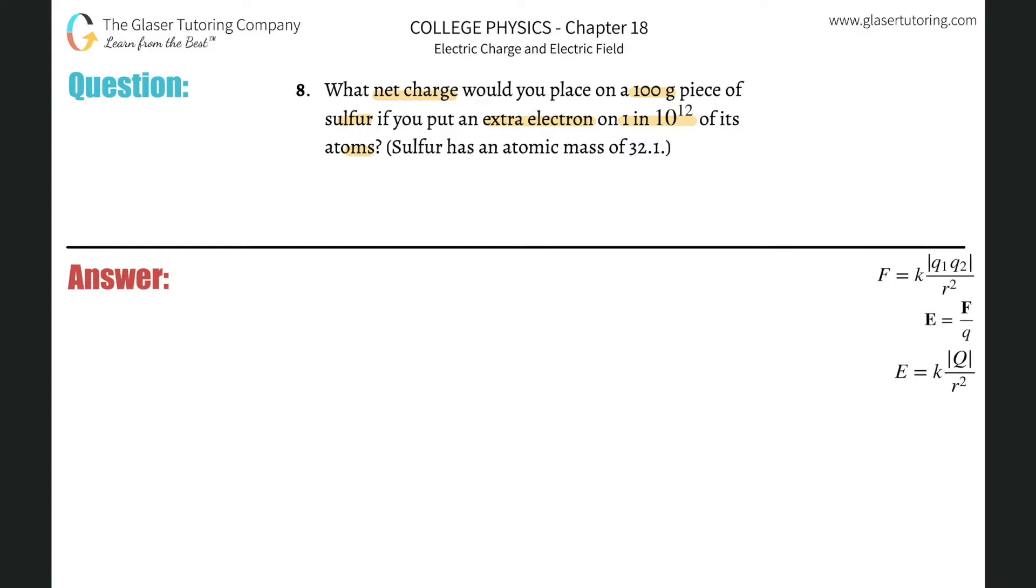Alright, so first thing is we have to find the number of atoms that there are of sulfur in a 100 gram piece. So 100 grams, this is back to chemistry. We've got grams at the bottom, we've got to first convert to moles. The atomic mass they told us was 32.1, so that means there's 32.1 grams of sulfur in one mole of sulfur.